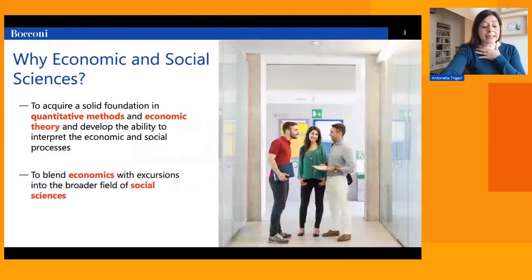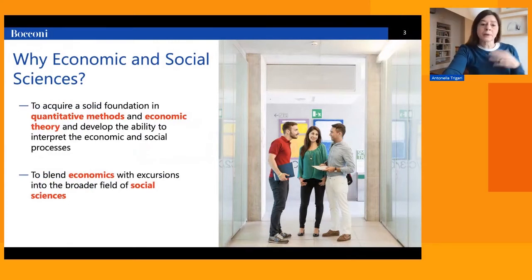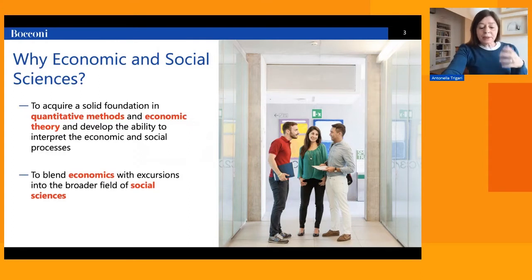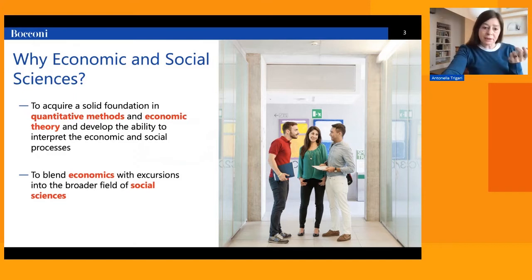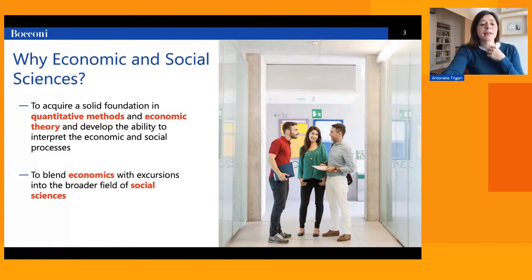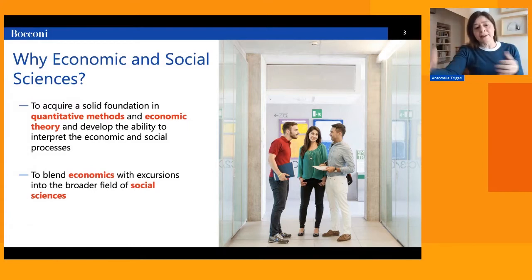The main objective of the program is to provide students with a wide-ranging and interdisciplinary training in economics, in line with frontier research. In particular, the course seeks to offer and develop advanced knowledge of economic theory and quantitative methods — mathematics, statistics, and econometrics — that are needed to critically interpret economic and social processes from theoretical and applied perspectives, both at the individual level and at the aggregate global level.